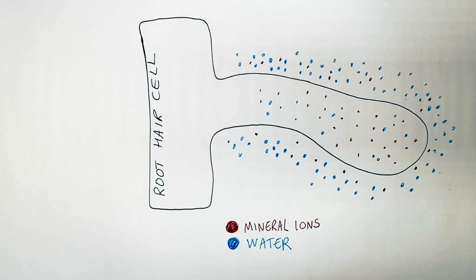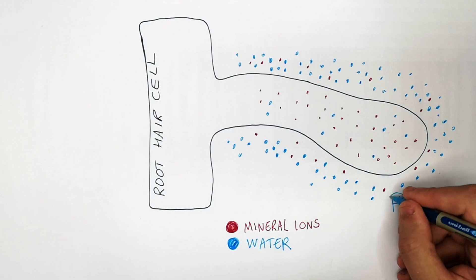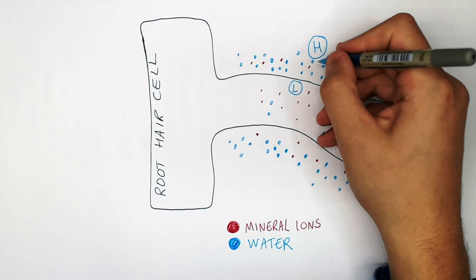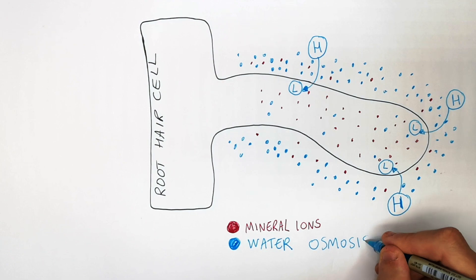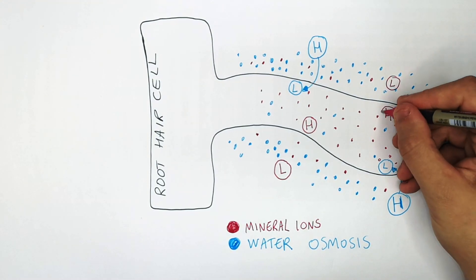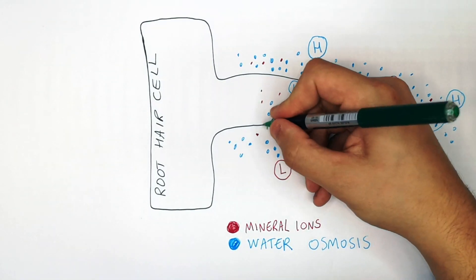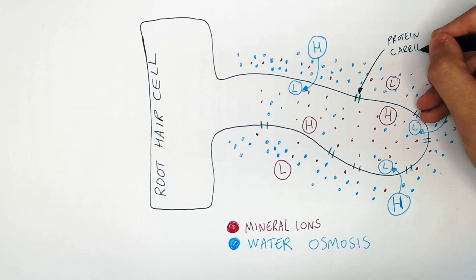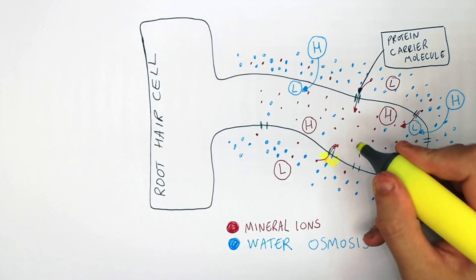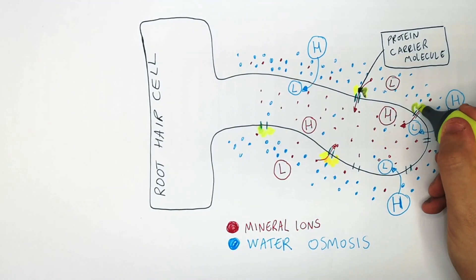In a root hair cell, mineral ions need to be absorbed from the soil, as does water. Mineral ions are absorbed by active transport whereas water is absorbed by osmosis. Water osmoses from a high to low concentration into the roots. Mineral ions are in lower concentration in the soil and higher concentration in the root hair cell, so they are transported by a protein carrier molecule across the cell membrane, requiring energy.